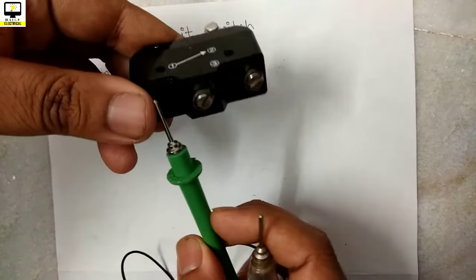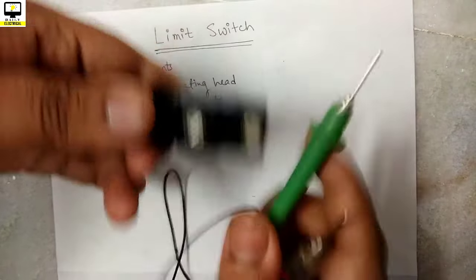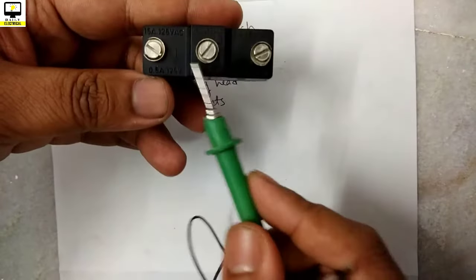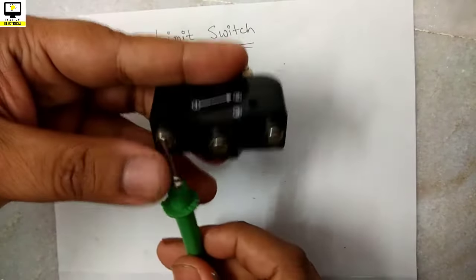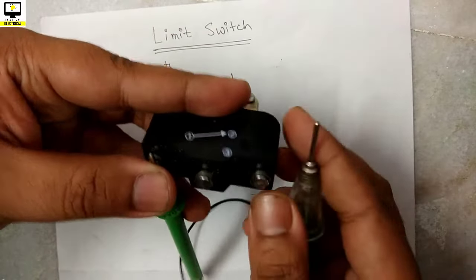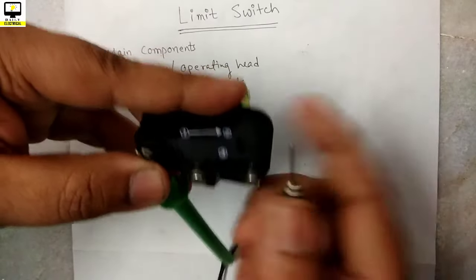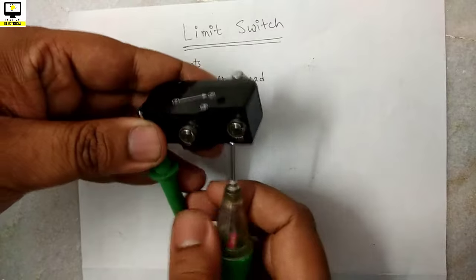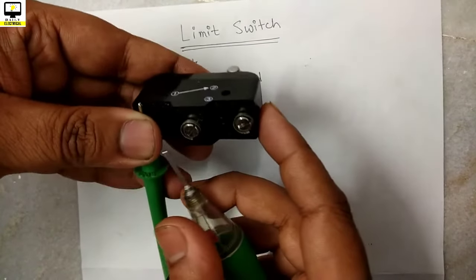1 and 2 is normally closed. That means when it is in normal condition, there will be a connection between 1 and 2. It is correct, and there is no connection between 1 and 3.